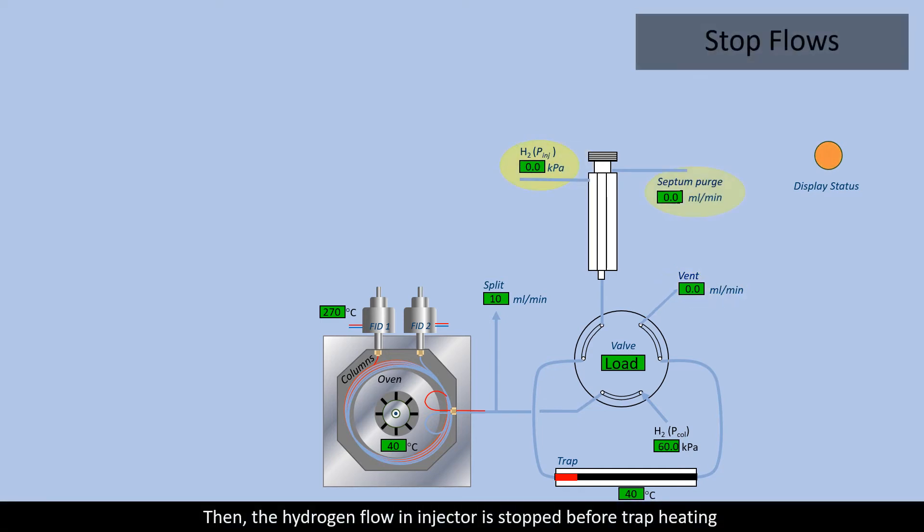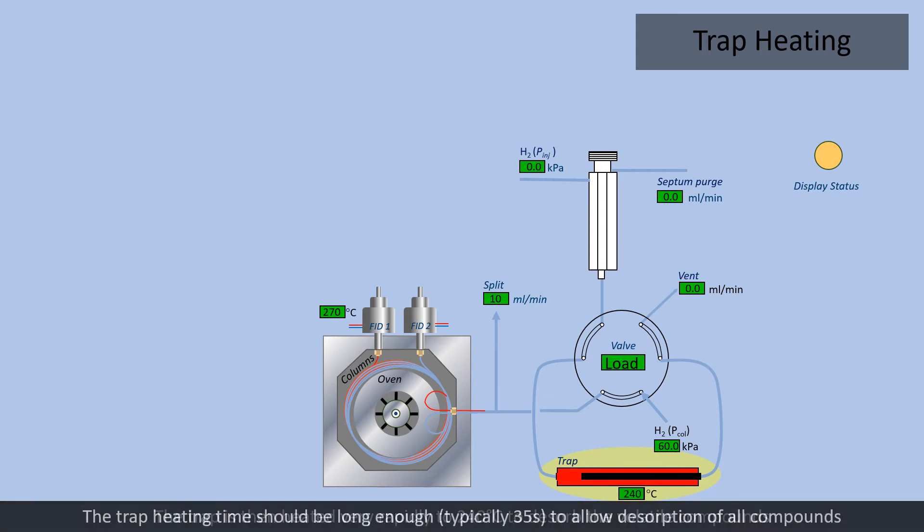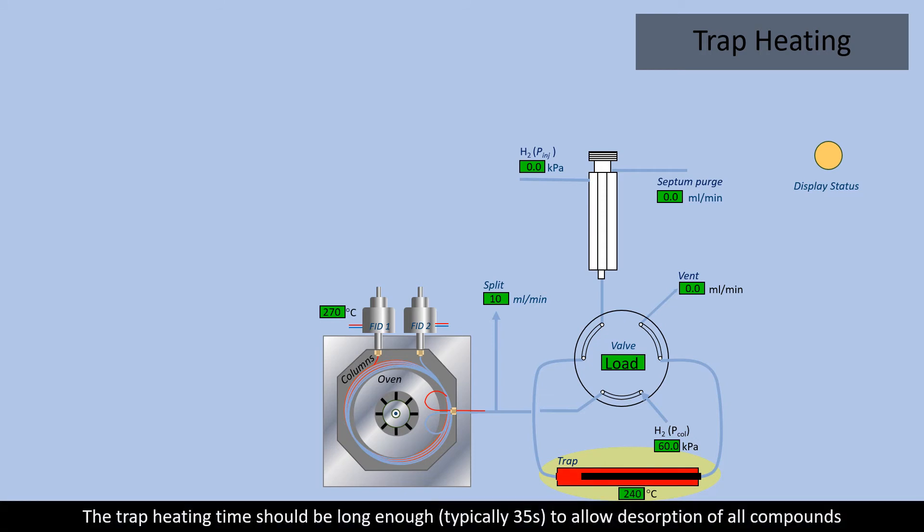Then, the hydrogen flow in injector is stopped before trap heating to prevent the elimination of volatile molecules to the vent. The trap is then heated very rapidly to 240 degrees to desorb the volatile compounds. The trap heating time should be long enough, typically 35 seconds, to allow desorption of all compounds.